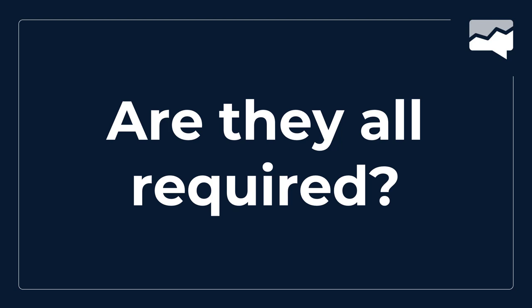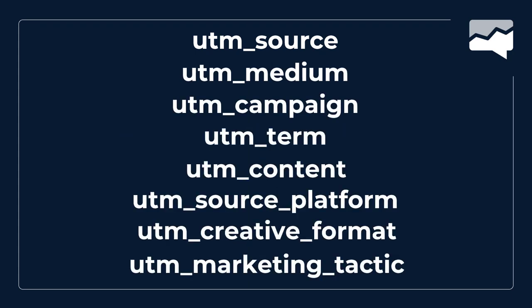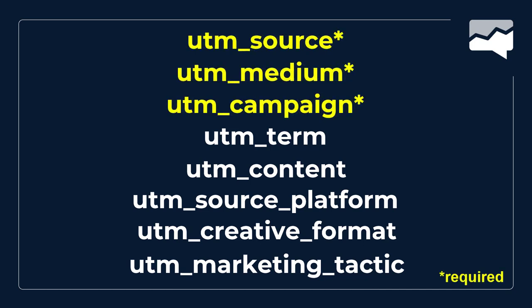Another common question is: are they all required? We have all eight different options. And the answer is no — it's actually only three that are required: Source, Medium, and Campaign. If you're using a different platform besides Google Analytics, you might have slightly different rules. But for Google Analytics 4, these are the three that are required. When building out your system, make sure you have at least these three.